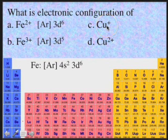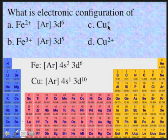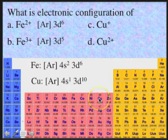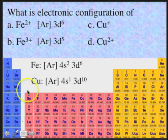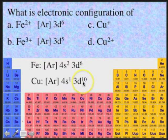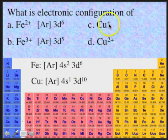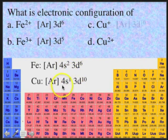For cuprous, Cu+: copper is a d9 element, so it borrows from the preceding 4s to become 4s1, 3d10. Now it has to lose one electron — it's going to lose the 4s1 — and you'll have argon core, 3d10.